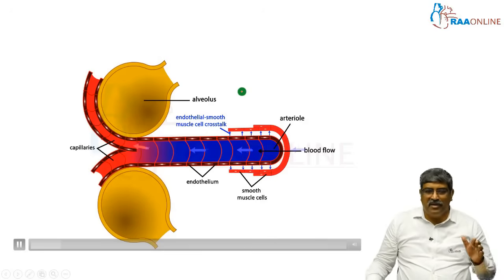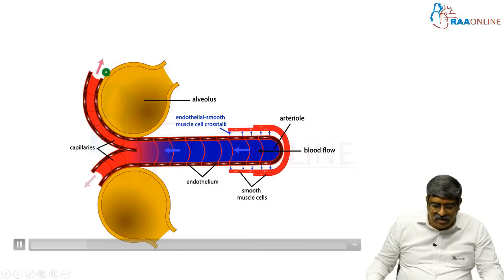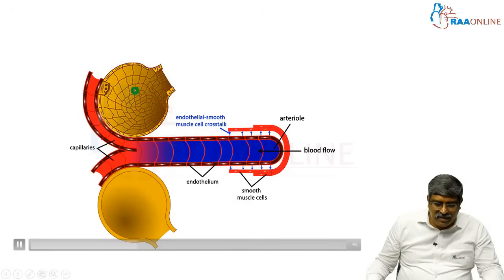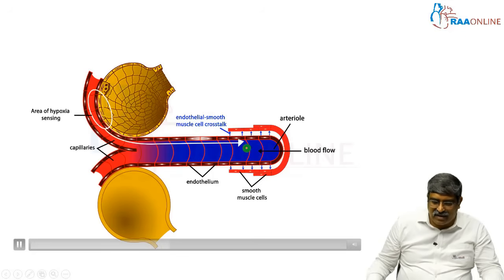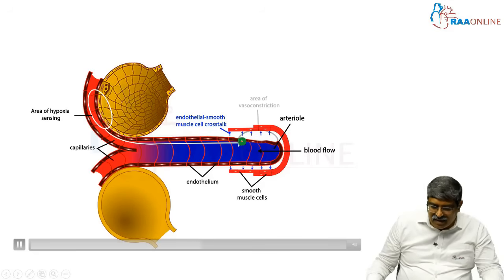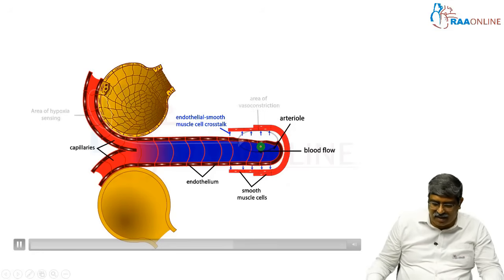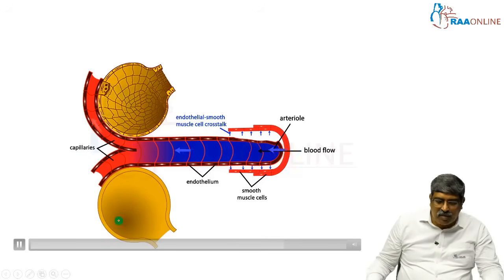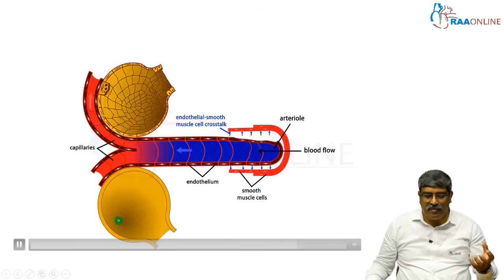Coming to hypoxic pulmonary vasoconstriction. This is the hypoxic alveolus and this is the normal alveolus. Because of hypoxia, a signal enters the vasculature — there is an endothelial smooth muscle cross-talk and this signal causes pulmonary vasoconstriction. As vasoconstriction happens, the blood is diverted away from the hypoxic alveolus to the normal alveolus. That is how HPV happens.